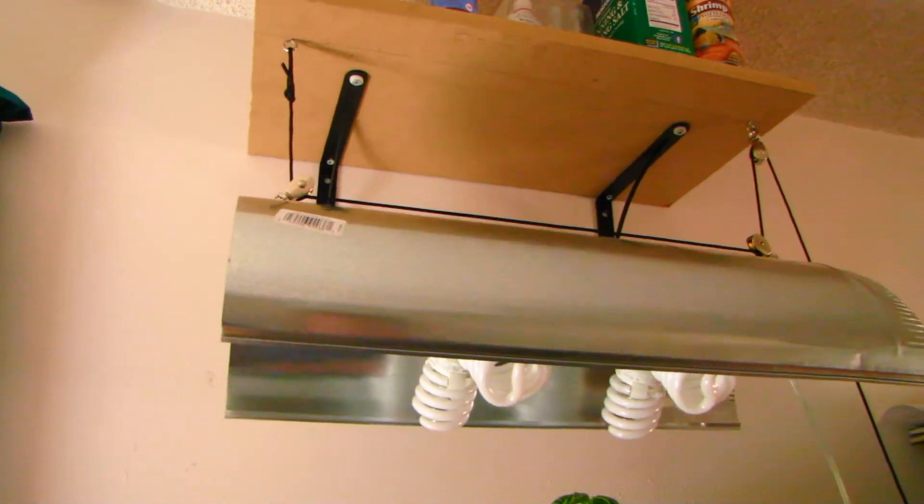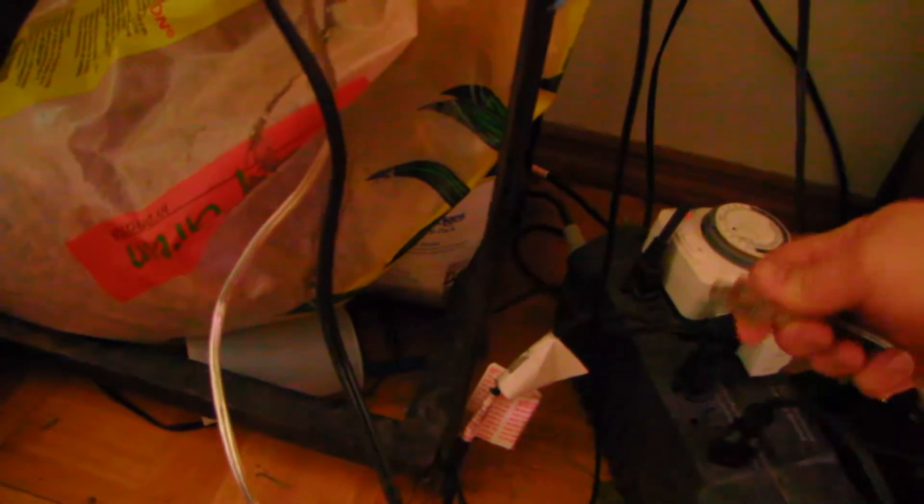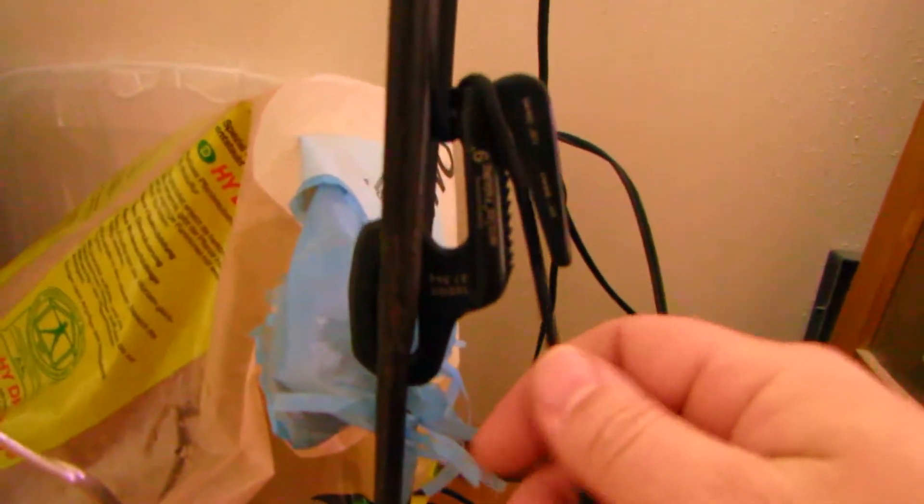I'm going to pop this off the tripod and show you how I have it tied. This is one of those figure nine locks. I'm going to plug the light back in. It's a little darker here. It's a figure nine lock. I just pull this way.